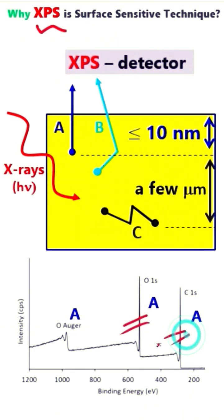These two peaks are photoelectron peaks. This peak is an Auger electron peak.